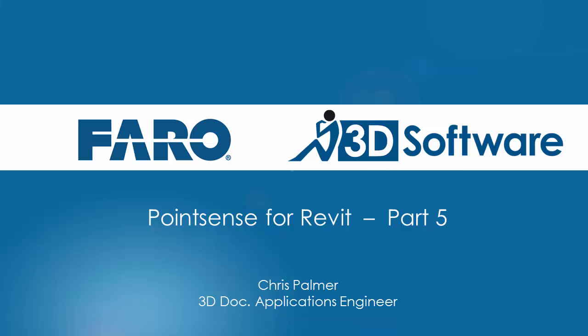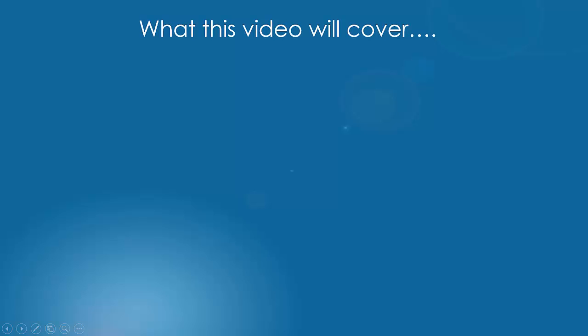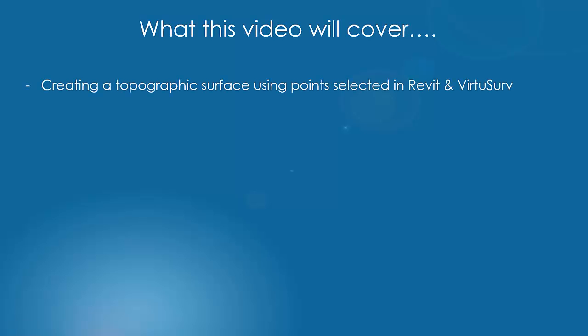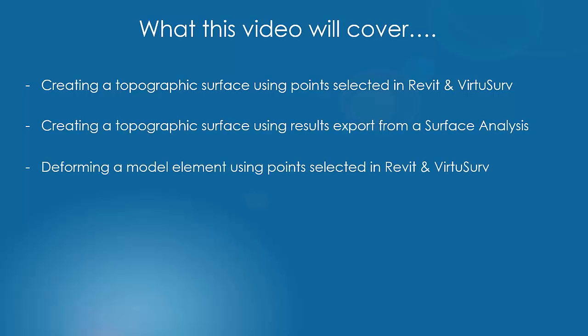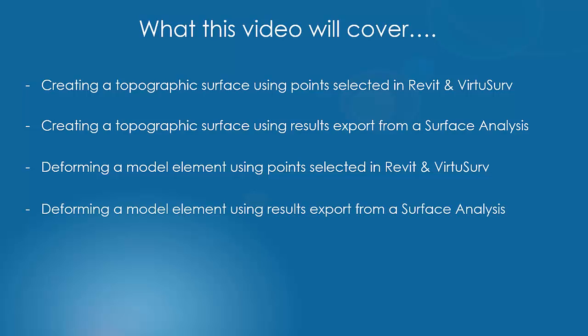Hi and welcome to part 5 in the Point Sense for Revit tutorial series. In this video we are going to look at creating a topographic surface using points selected in Revit and VirtuServe, creating a topographic surface using results exported from a surface analysis, deforming a model element using points selected in Revit, deforming a model element using results exported from a surface analysis, and finally clearing the point sense data from the model.